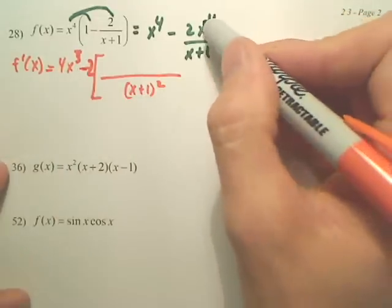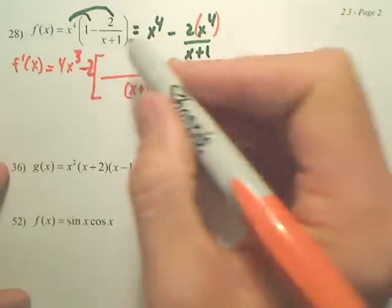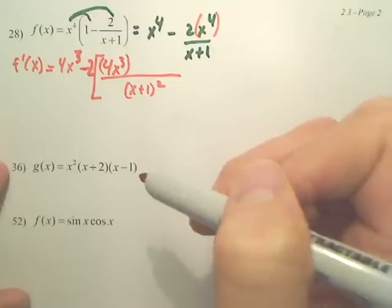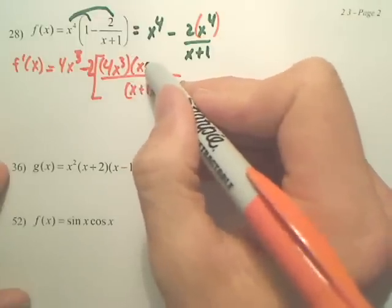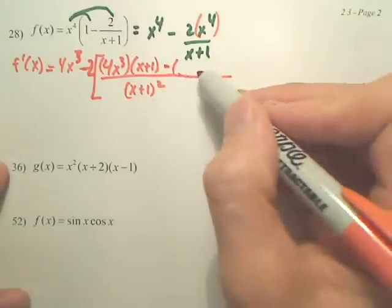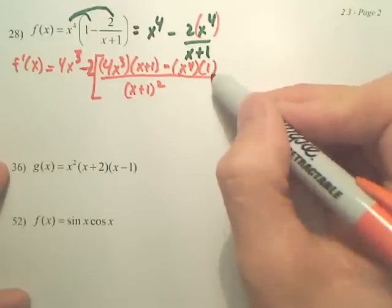So, to derive, we're just deriving this piece now. So, x to the 4th is 4x to the 3rd. Leave the bottom, or yeah, g of x. And then, don't forget it's minus. Leave the top, which is x to the 4th. And then, derive the bottom, which is 1.